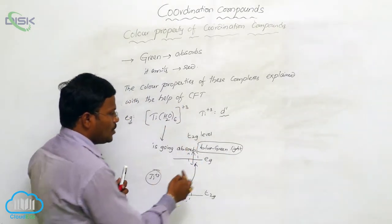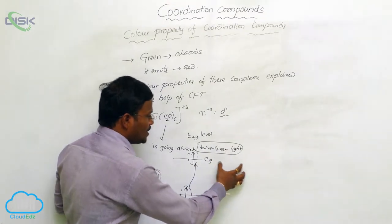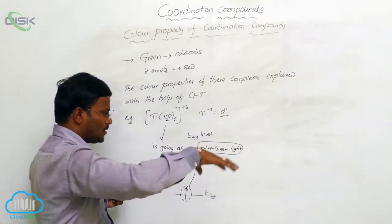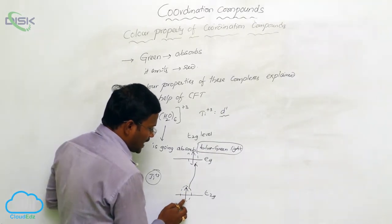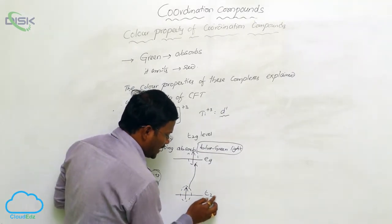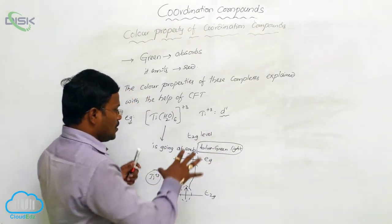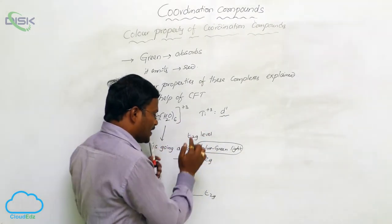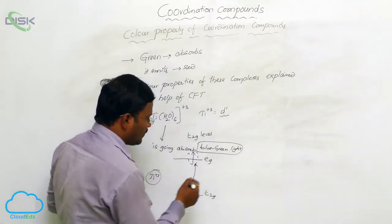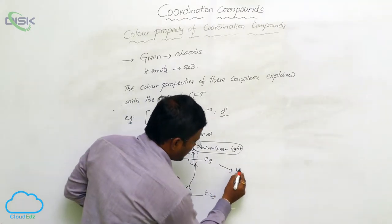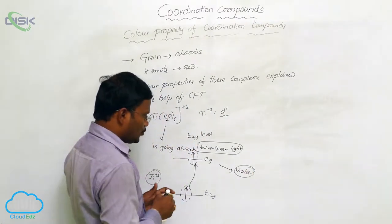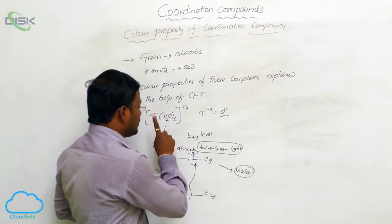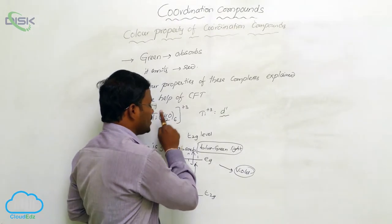The electron present at t2g level of titanium plus three is going to absorb blue-green light from visible light. During this mechanism, electrons from t2g level excite to eg level. While electrons return from eg level to t2g level, there is release of violet color. Due to this, hexa aqua titanium 3 plus complex seems to be violet color.